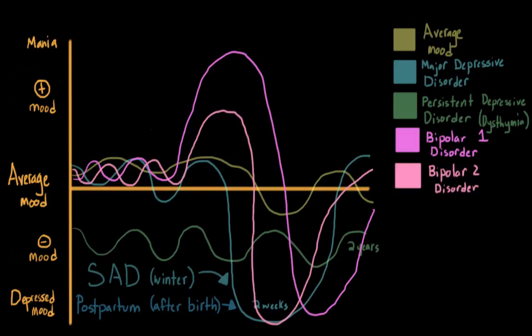In bipolar II disorders, the individuals cycle between depression and hypomania. And this is a less extreme version of mania.